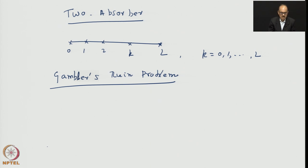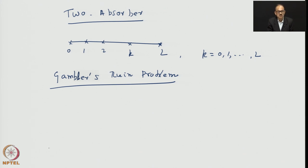There is a dollar rule: supposing at any point in time the amount he has accumulated becomes zero, then he has to quit because he has no more capital. The game is over for him.